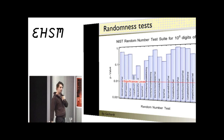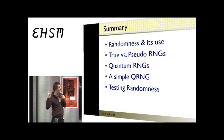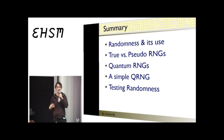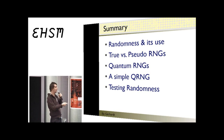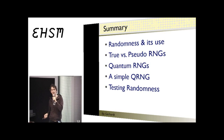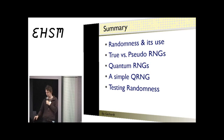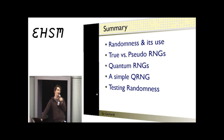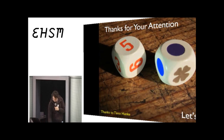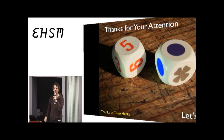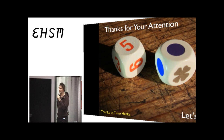So in summary: I covered randomness and its uses, true hardware-generated randomness versus pseudo-random number generators, the fundamental working principles of quantum random number generators, a very simple quantum random number generator with interesting properties, and an outlook on testing randomness. Thanks for your attention, and thanks to Timo Hanke who is the mathematician behind this — my profession is quantum optics. I have two random generators with me and if time allows I'll test them.